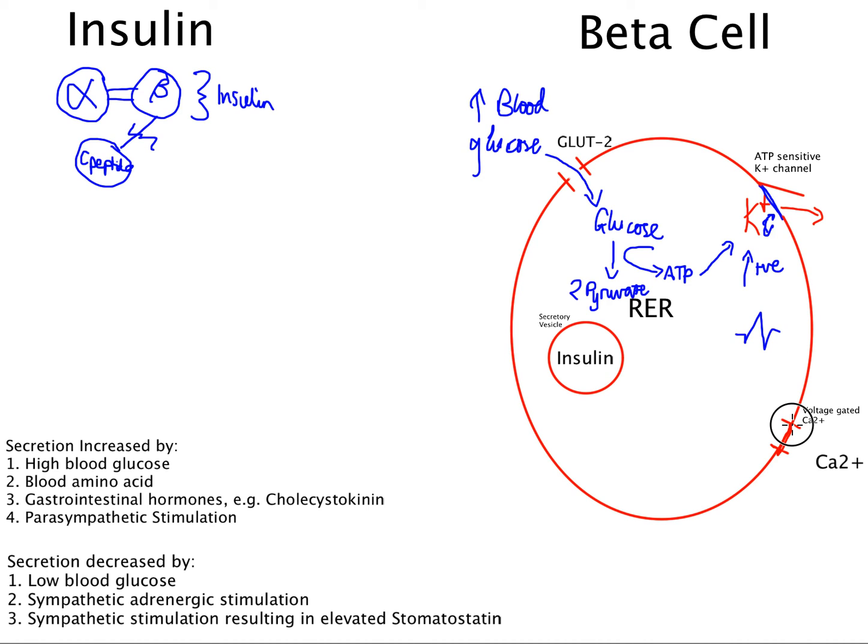This results in depolarization of the cell and opening of the voltage-gated calcium channel. The resultant influx of calcium ions down their concentration gradient has two effects. We have the acute phase, which is the resultant release of preformed insulin, and that occurs in the first 10 minutes after detection of blood glucose. We get release of the insulin in these secretory granules via exocytosis outside the cell.